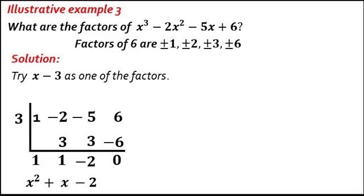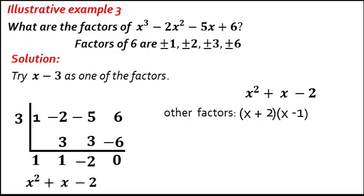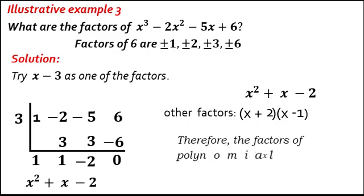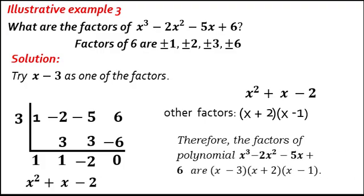This can still be factored. Use your factoring skills by trial and error. Find two numbers whose product is negative 2 and whose sum is 1. The factors of negative 2 are 2 and negative 1. So the other factors are quantity x plus 2 times quantity x minus 1. Therefore, the factors of x cubed minus 2x squared minus 5x plus 6 are quantity x minus 3 times quantity x plus 2 times quantity x minus 1.